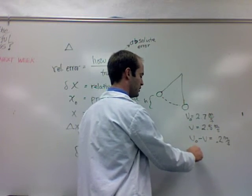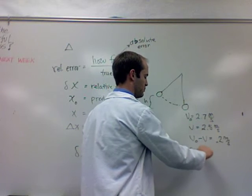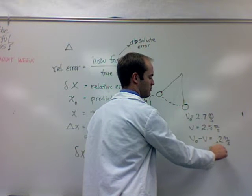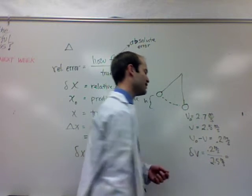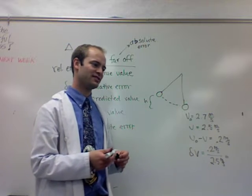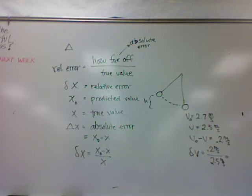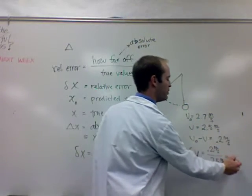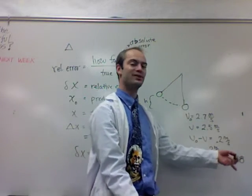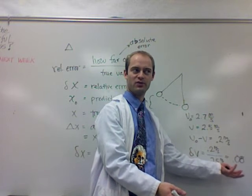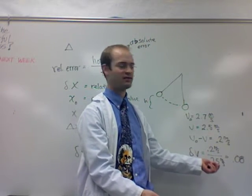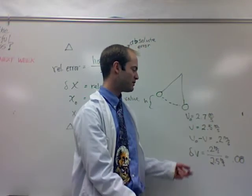Now our relative error is our absolute error compared to the true value, 2.5. So we would need to calculate that. Hold on a second. So this is 0.08. Notice there are no units on it because we divided meters per second by meters per second. It's a ratio. It's a ratio of how far off we were from the true value compared to the true value itself. So our relative error is 0.08.